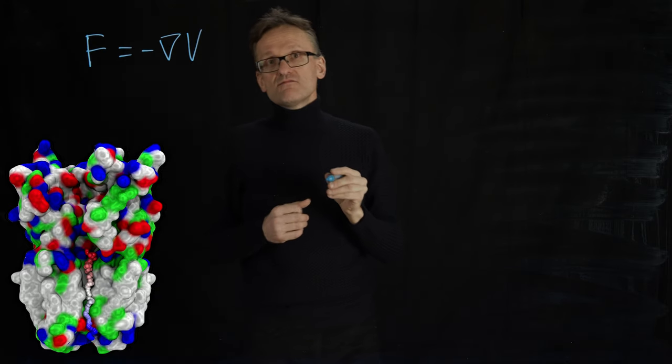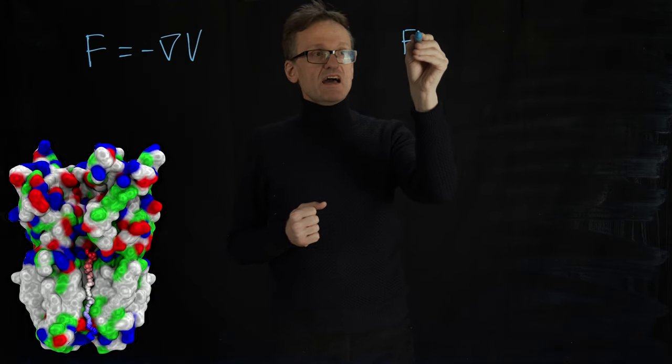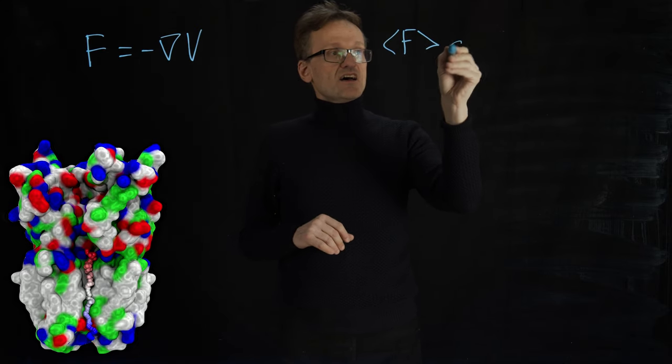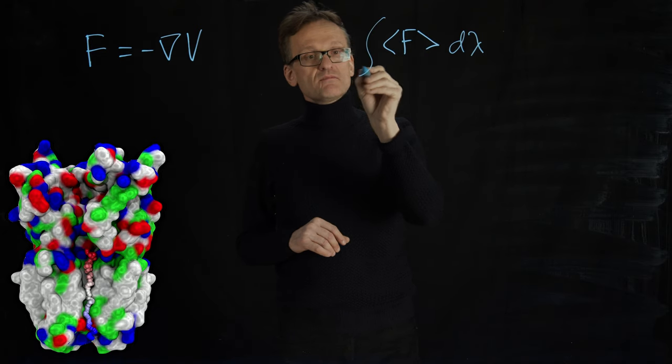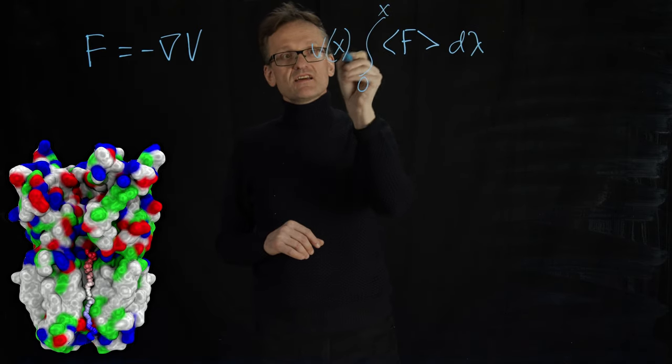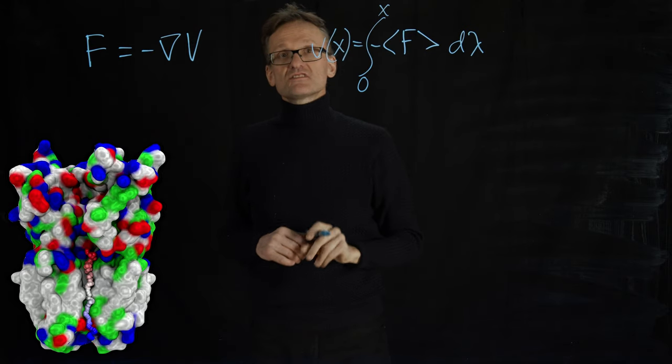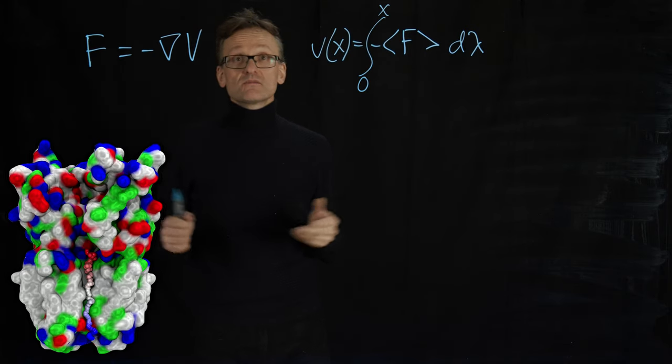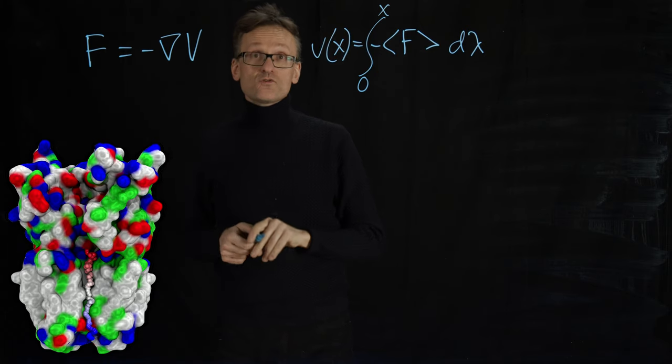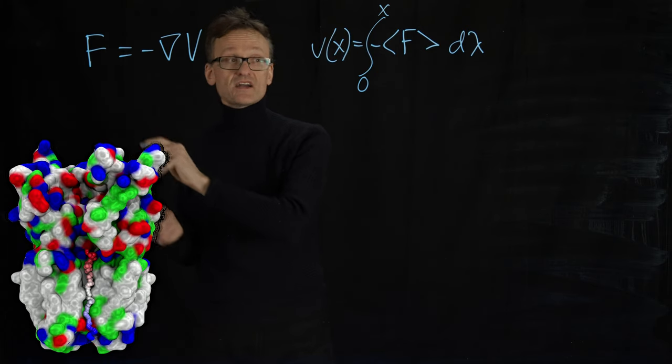And if I invert that, if I just calculate the average force to even out all the noise along some sort of variable that I'm going to call lambda, if I integrate that from zero to x, that's really going to be minus my potential. So I can get the potential from the average force along a specific reaction coordinate.